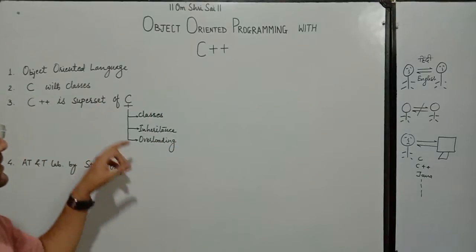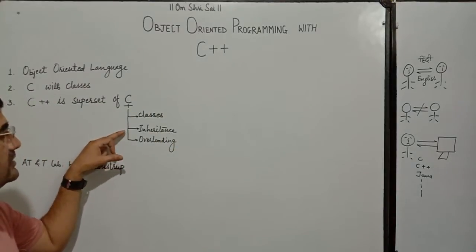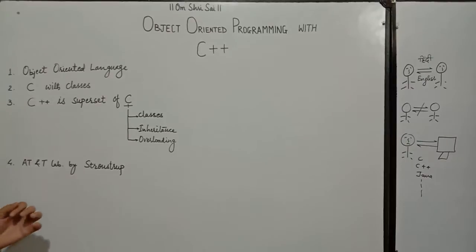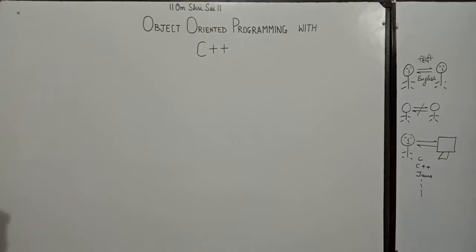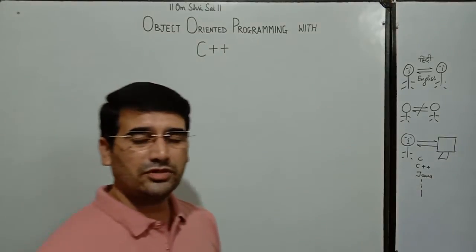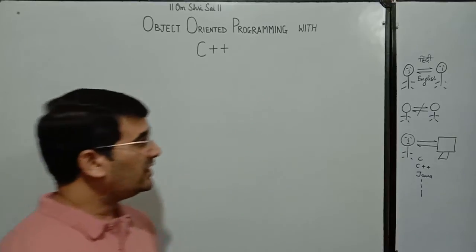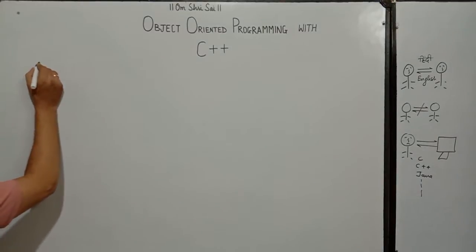And additionally, the add-on is classes, inheritance, overloading. C++ language was developed by Strustrup in AT&T lab. This is all about the basics of C++. Now, let us discuss some common terms related to programming. The first term we should discuss or know, that is algorithm.